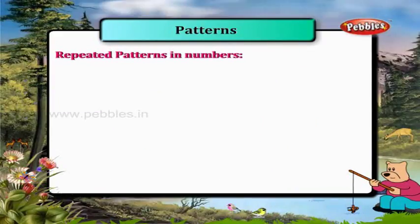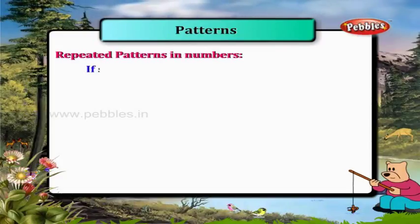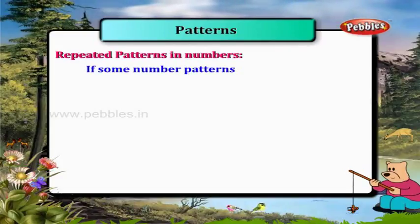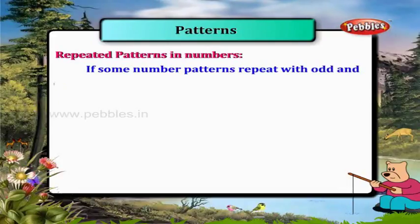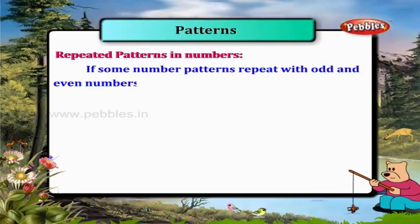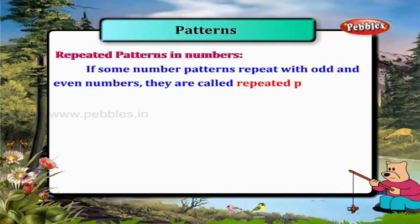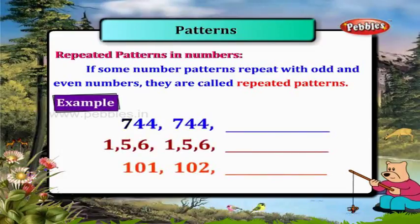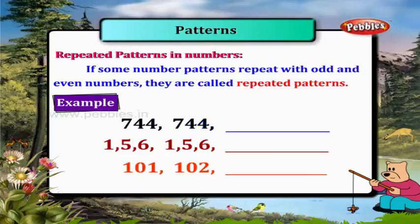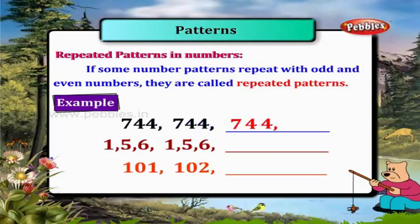Repeated Patterns in Numbers. If some number patterns repeat with odd and even numbers, they are called repeated patterns. For example: 7, 4, 4, 7, 4, 4, 7, 4, 4 and so on.